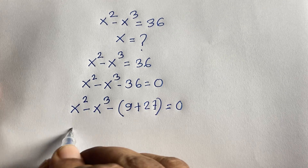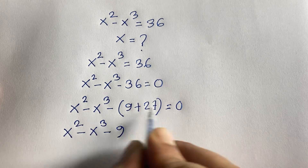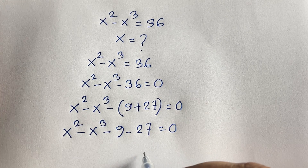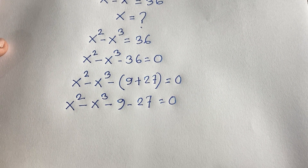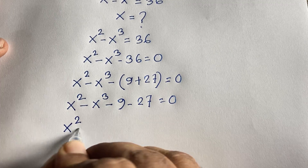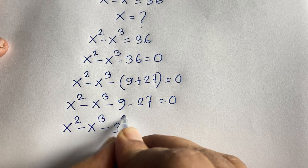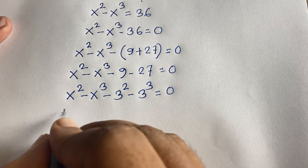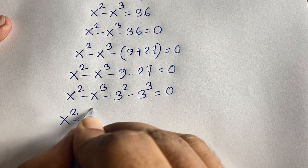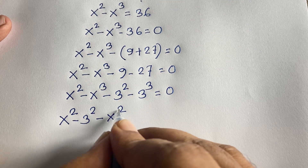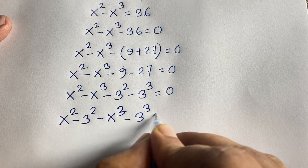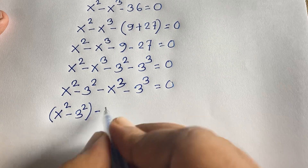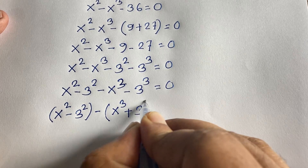So it will be x squared minus x cubed minus 9 minus 27 is equal to 0. Rearranging the signs, we get x squared minus 3 squared, and then minus x cubed plus 3 cubed — where 9 is 3 squared and 27 is 3 cubed — rearranged as: x squared minus 3 squared minus x cubed plus 3 cubed is equal to 0.